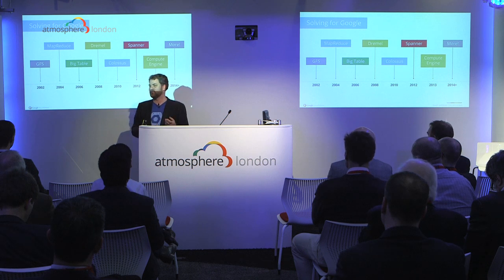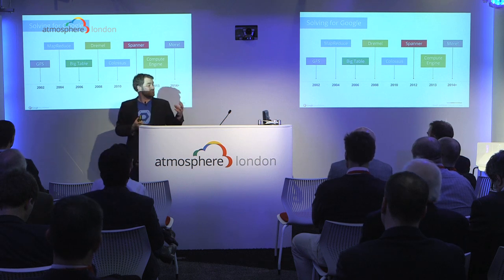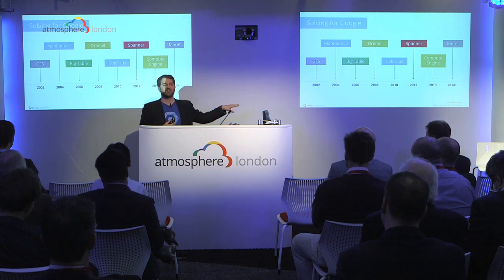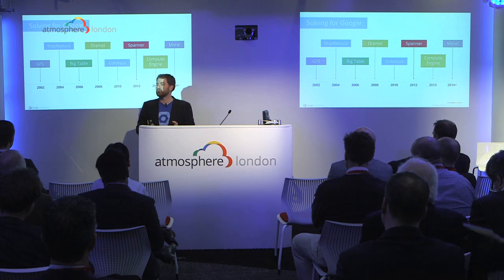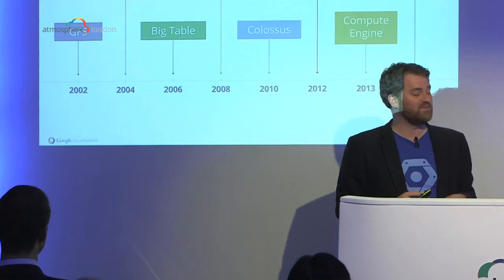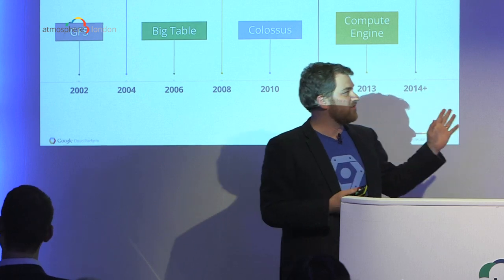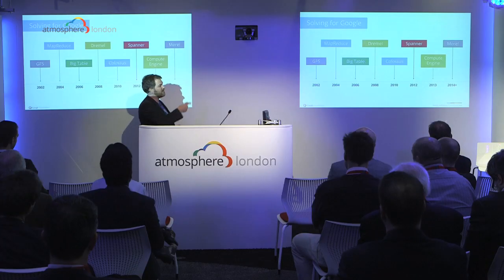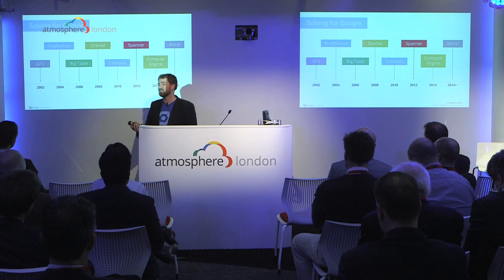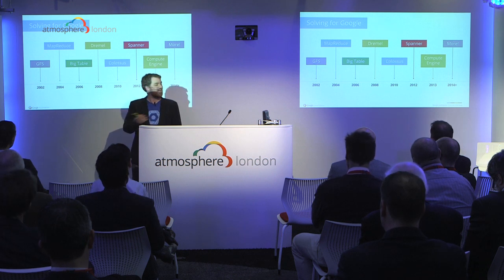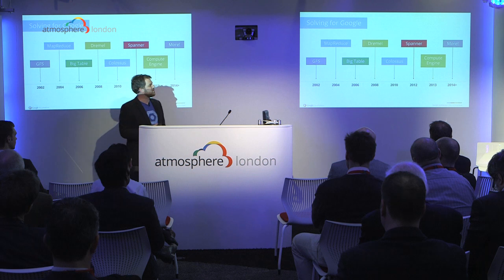Those two papers, written shortly after Jeff Dean sent that email, were taken by a guy called Doug Cutting and turned into something called Hadoop — an open implementation of those libraries. It's been gratifying to see it really get its day in the sun over the last two or three years. But we didn't stop there. The BigTable paper in 2006 seeded the NoSQL database movement — Cassandra, MongoDB, the principles of eventual consistency and how you manage data at scale all came from that paper. Then Dremel, which I'll talk more about.